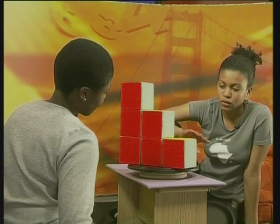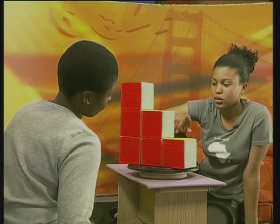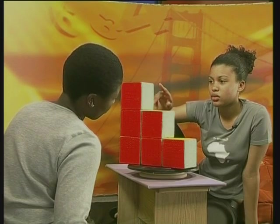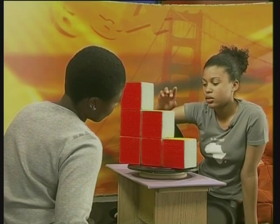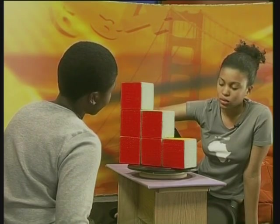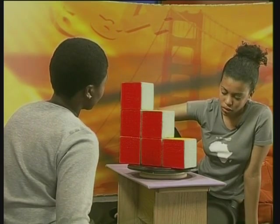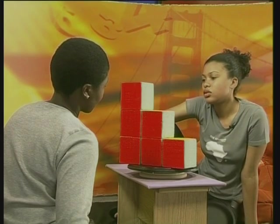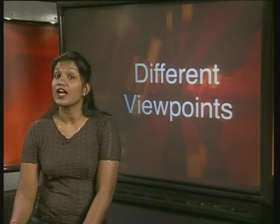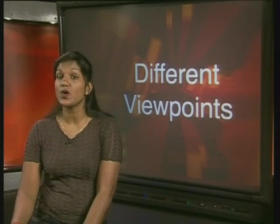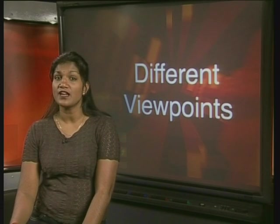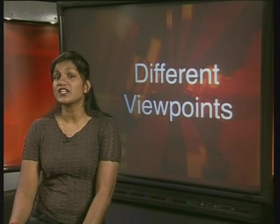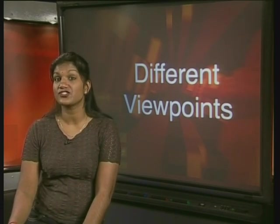I have placed a cube structure in front of Zandi and Tabeka. It is made of 3cm by 3cm by 3cm cubes. I have asked them to work out the total surface area that I would need to cover if I wanted to paint this structure.